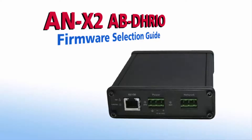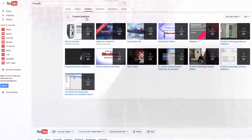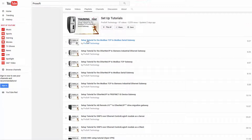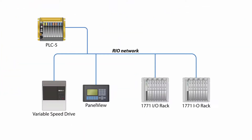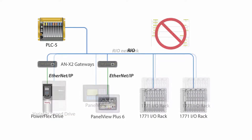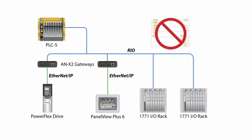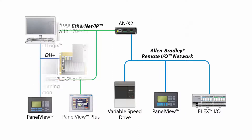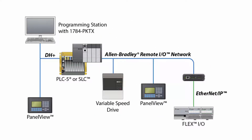In this video we'll be going through the different firmware options available for the ANX2AB DHRIO gateway. This is intended as a supplement for our lineup of product training videos that walk you through the full configuration process. The gateway is designed to allow customers to initiate a phased migration approach to replacing or upgrading legacy remote IO PLCs, HMIs, drives, or flex IO adapters.